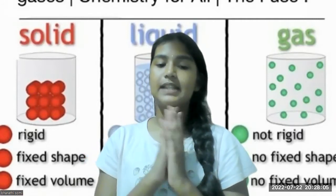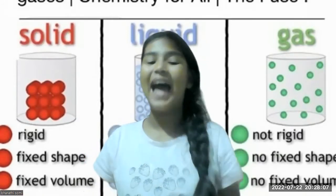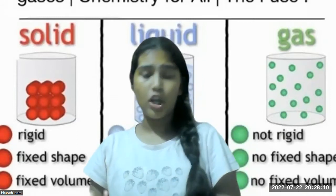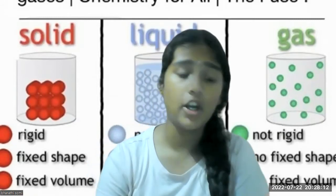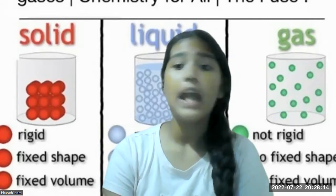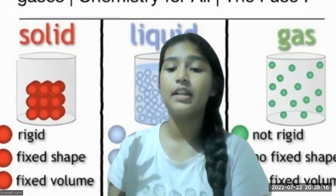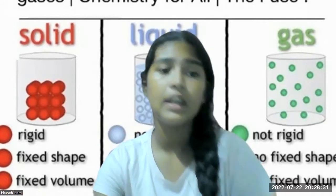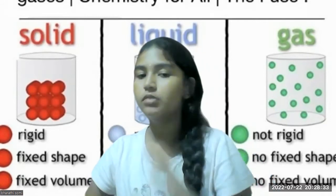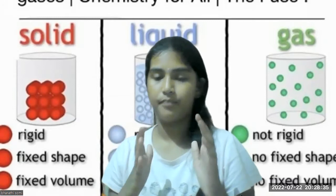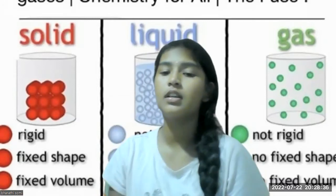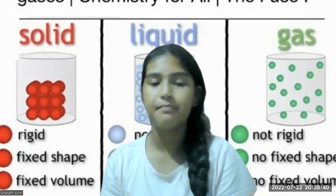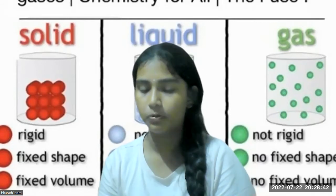This tells us the property that solids have a definite mass and volume, which cannot be changed. In solids, the molecules are compactly packed, which gives them a definite mass, shape, and volume.